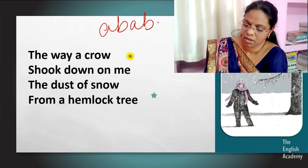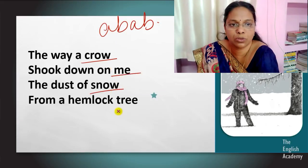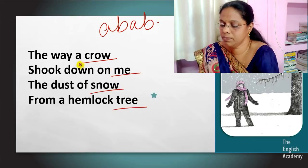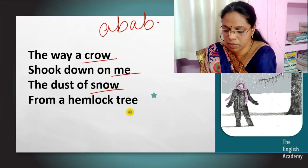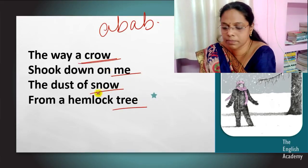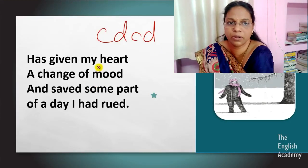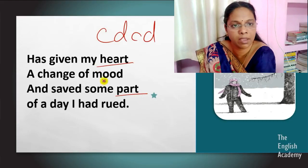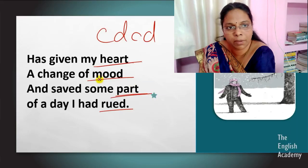I explained to you the rhyme scheme. As you know very well, you already learned this in class nine. The first stanza: A-B-A-B — 'crow' is rhyming with 'snow', 'me' is rhyming with 'tree'. And the second stanza, the same: C-D-C-D — 'heart' is rhyming with 'heart', and 'mood' is rhyming with 'rude'. Other poetic devices I will explain to you in the next session.